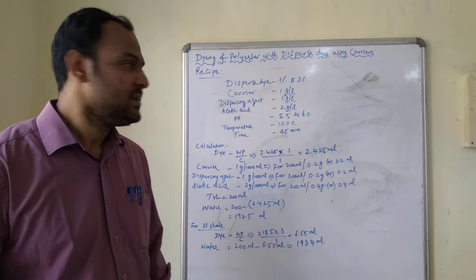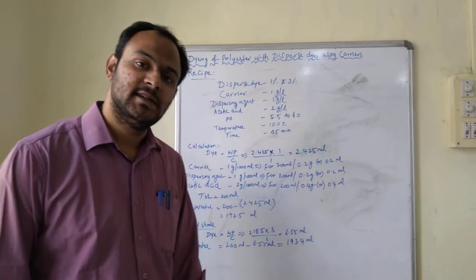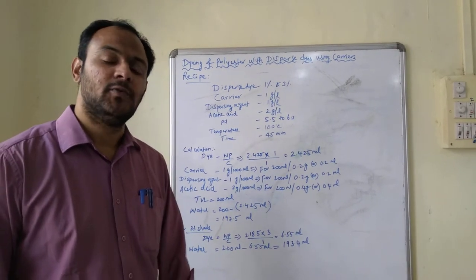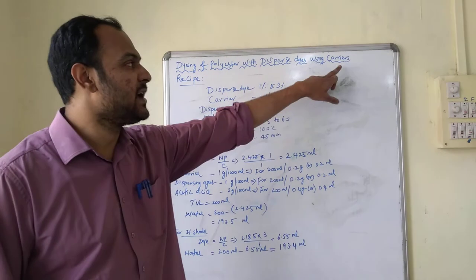In the previous lecture, we discussed dyeing of polyester with dispersed dyes using HTHP dye machine. Today we are going to use the same HTHP dye machine, but we are going to use a chemical called carriers.